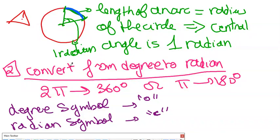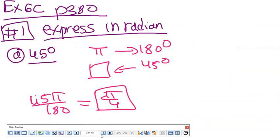Part two: how do we convert from degree to radian? We know that 2π is 360 degrees. Pi is approximately 3.14, but it's not an accurate number. It's easier, if you don't have a calculator, to use π = 180 degrees. The symbol for degrees is a small circle, and the symbol for radians is a small 'c'.